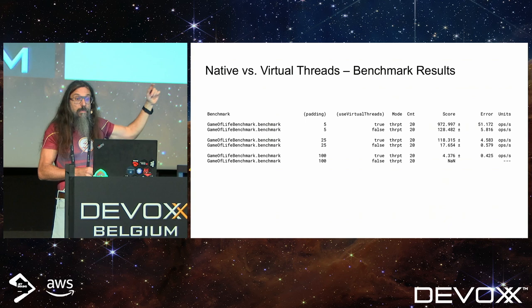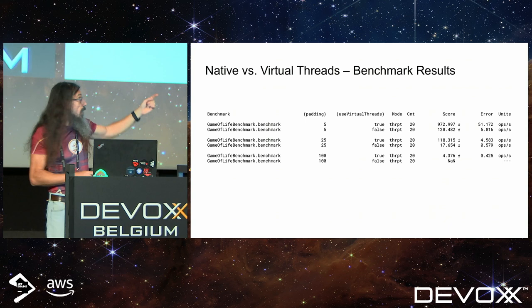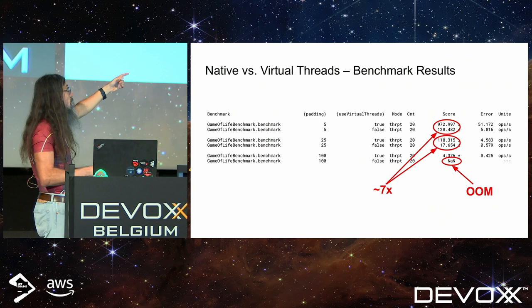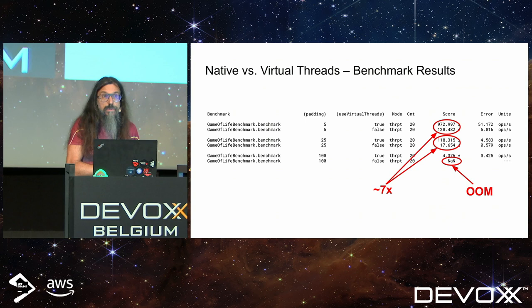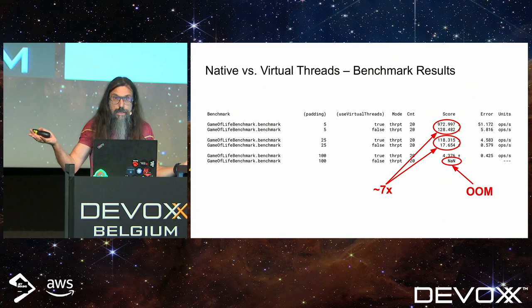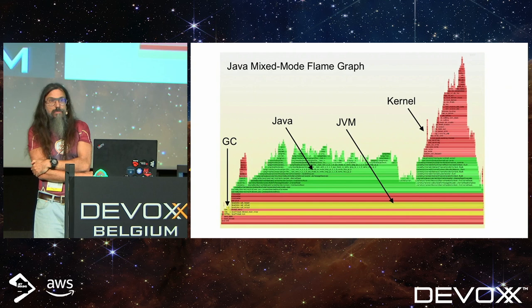Running the benchmark, virtual threads were around seven times faster than native threads in both the smaller and medium board sizes. I couldn't run the largest board with 50,000 native threads because I couldn't create that many native threads on my machine.